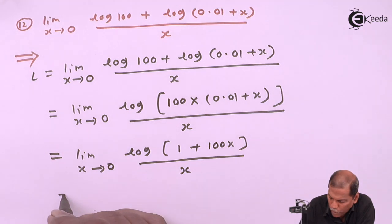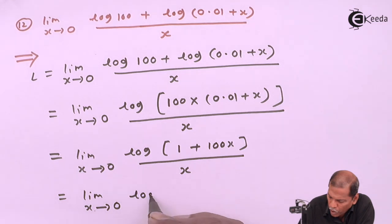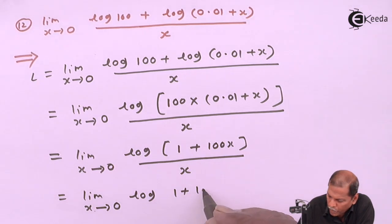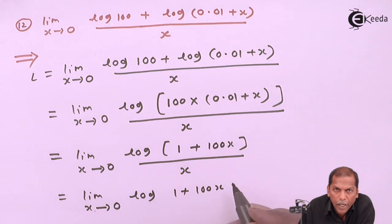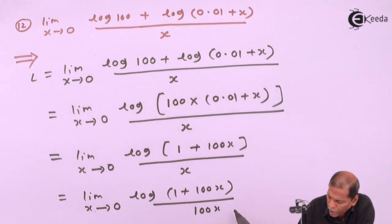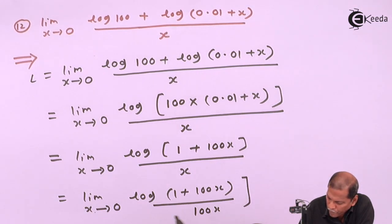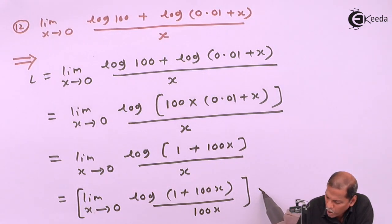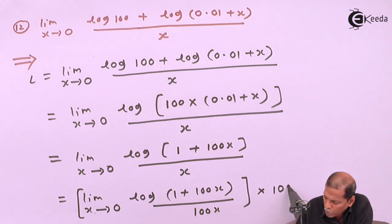Now to get this, I can write limit as x tends to 0 of log(1 + 100x) upon 100x, times 100.